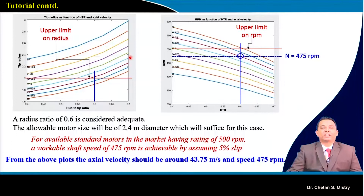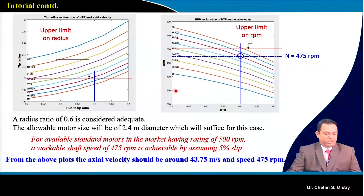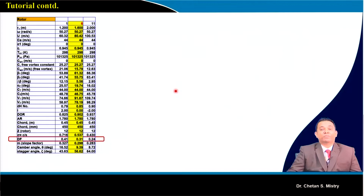Based on this parametric study we came up with a radius ratio of 0.6, giving an axial velocity in the range of 43.75 m/s and a rotational speed of approximately 475 rpm. Based on that we assumed an axial velocity of 44 m/s and a rotational speed of 480 rpm as our final parameters for further calculation. The design approach for industrial fans and axial compressors for aero engines remains the same.